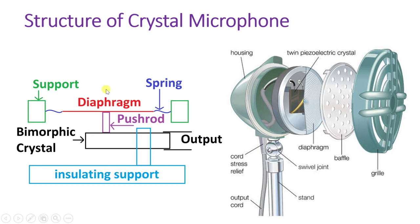When you apply sound pressure, the diaphragm vibrates. Based on that vibration, the push rod generates pressure on the bimorph crystal, and based on that pressure change, it generates an electrical signal. There are two electrodes which serve as output terminals from which we can take the electrical output.